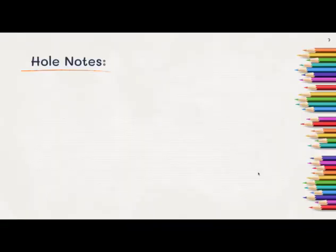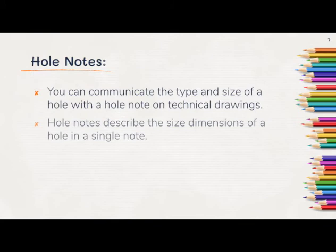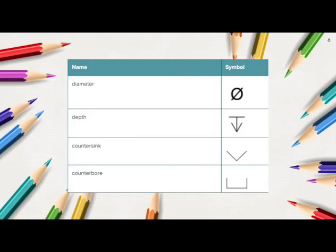So let's take a look at some hole notes. You can communicate the type and size of a hole with a hole note on technical drawings. Hole notes describe the size dimensions of a hole in a single note. There are a variety of symbols that help us figure out what type of hole we need to create. These are the symbols that are most often used: diameter, depth, countersink, and counterbore.